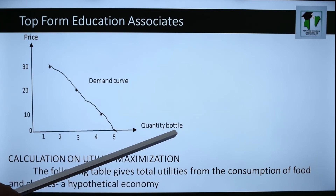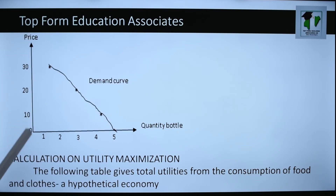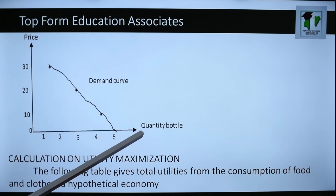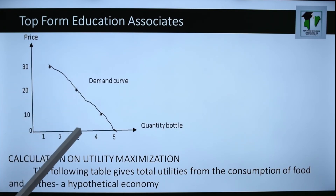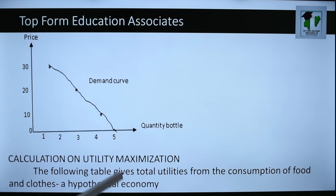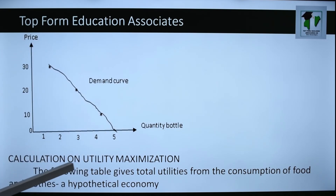Along the Y-axis, 1 cm equals 10; along the X-axis, 1 cm equals 2. When price is 30 naira, quantity demanded is 1; when price is 20 naira, quantity demanded is 3; when price is 10 naira, quantity demanded is 5. Drawing this, you arrive at a demand curve that slopes downwards from left to right.